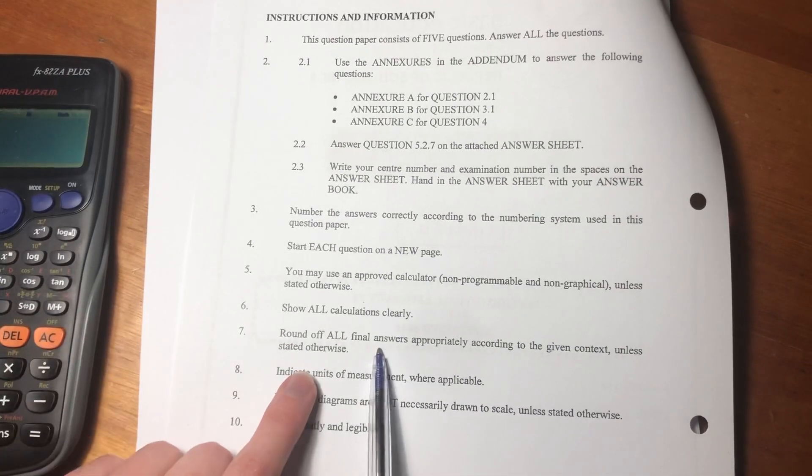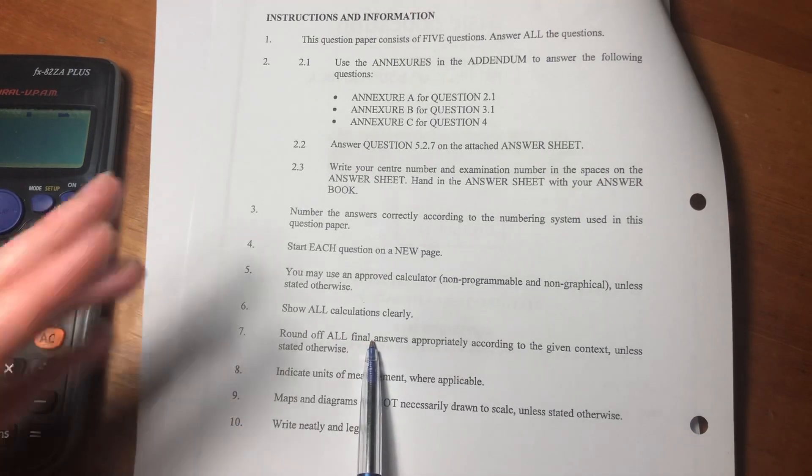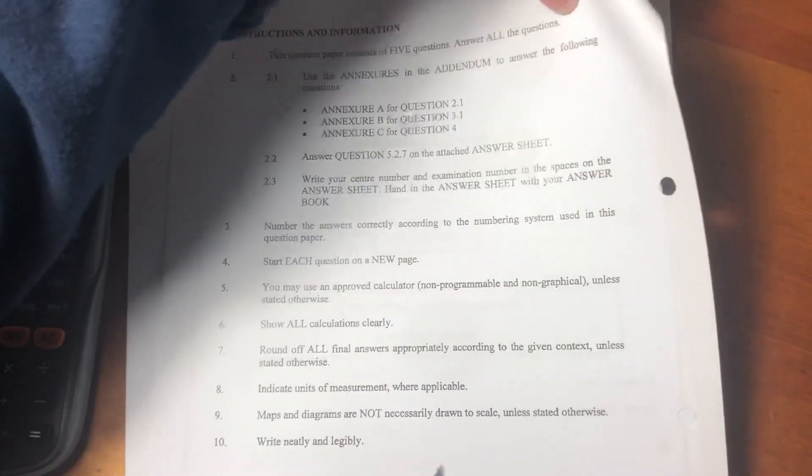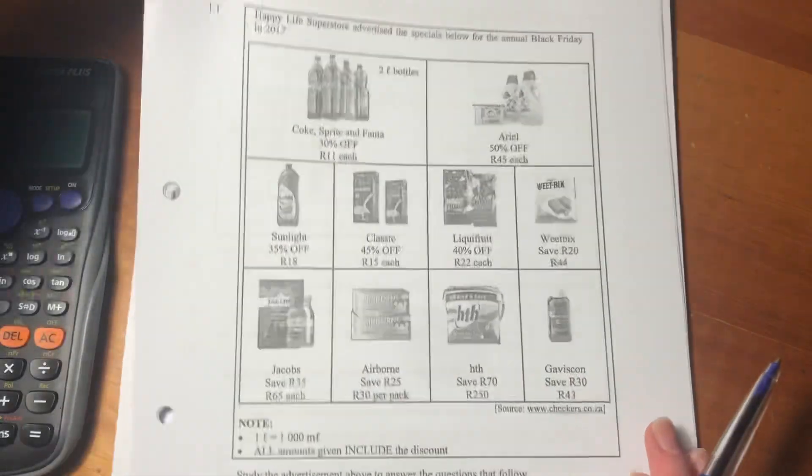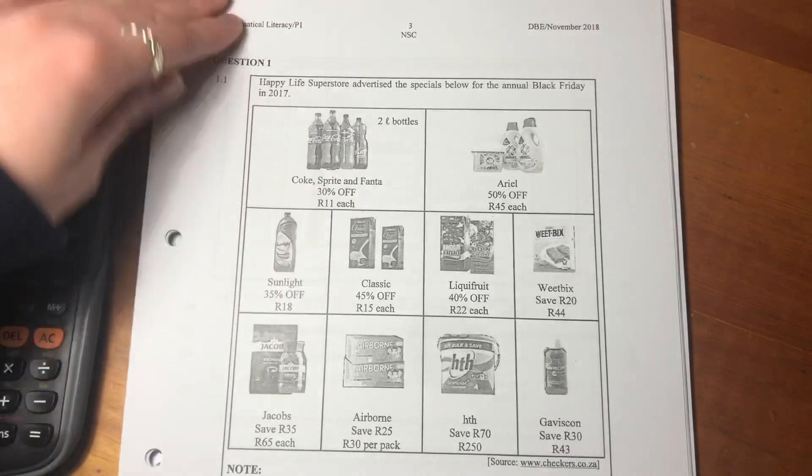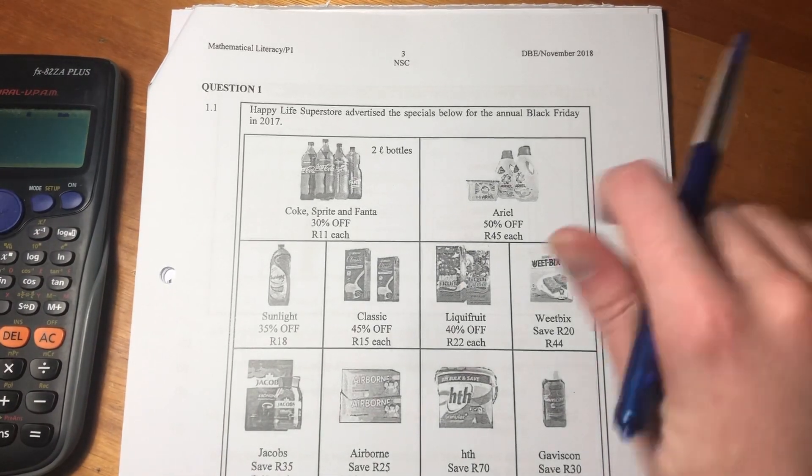Round off all final answers. Don't round off before then because you can make a mistake or have a rounding error. We don't want to give anyone any reason to take away marks from us.